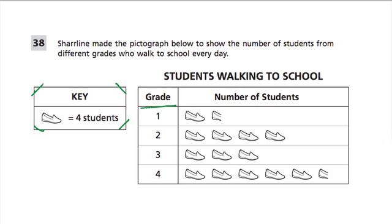So here with the number of the grades, we have 1st, 2nd, 3rd, and 4th grade, and the number of students. We can quickly realize that for grade 1, there's one and a half shoes, so that's 6 students.